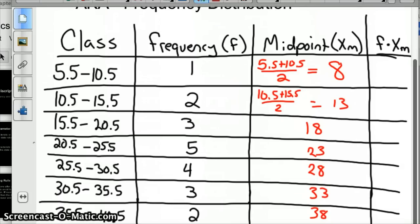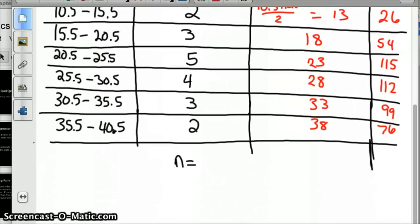The last column: take your frequency times the midpoint. It's kind of like a weighted mean. 8 × 1 = 8, 13 × 2 = 26, 18 × 3 = 54, 115, 112, 99, and 76. Then what you do is add all those up.